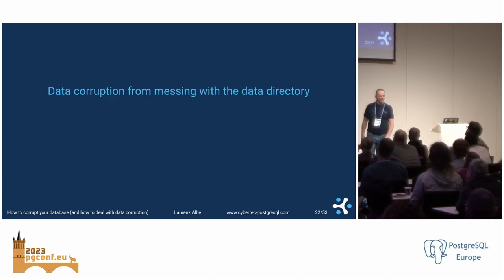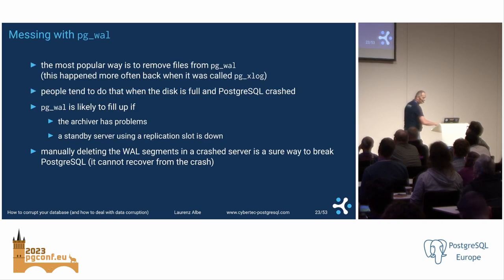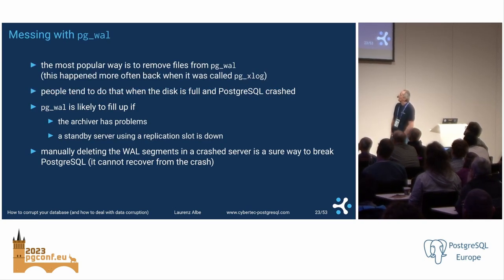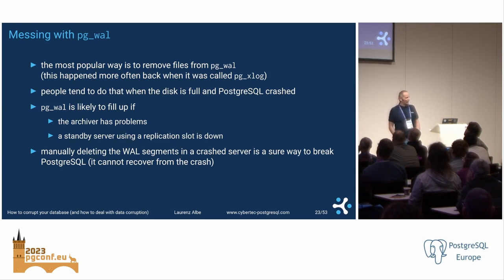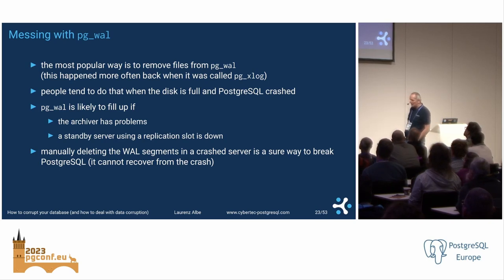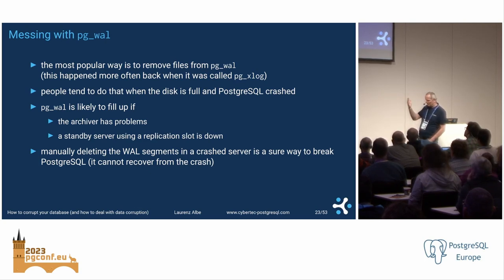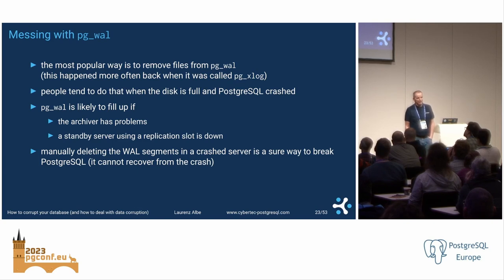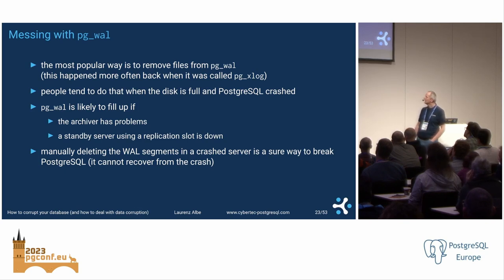We're getting to more crude methods of breaking a database. Messing with the data directory, usually by deleting files from pg_wal. There are certain error scenarios — your archiver gets stuck, you have a stale replication slot, and files keep piling up in pg_wal. Eventually your database crashes because the disk fills up. Somebody notices a lot of files in the directory and deletes them — and of course, if you want crash recovery, you need WAL. So you deleted exactly what you needed to recover and turned a small problem into a big problem.